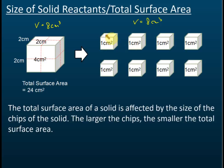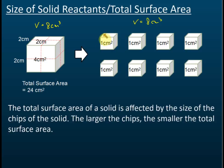After cutting into smaller pieces, the dimension of each small cube becomes 1 by 1 by 1. So the area of one side is 1 cm². The total surface area for one small cube is 6 cm², because it has six sides.